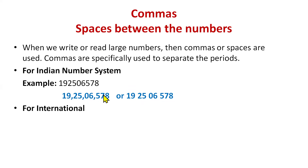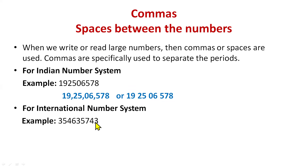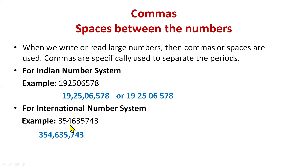Now we will do the international number system. In the international number system, three members come under one period. So here this is the ones period, this is the thousands period, and this one is our millions period. Commas will be inserted after every three digits. After three digits you put commas or leave spaces so we can identify the periods easily.